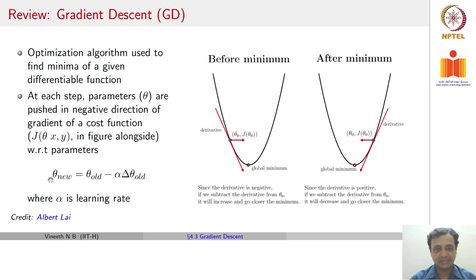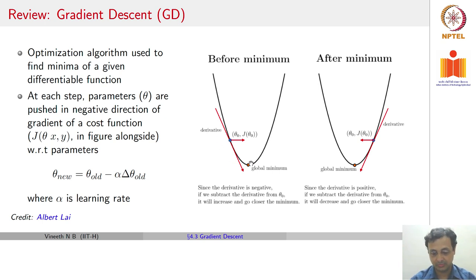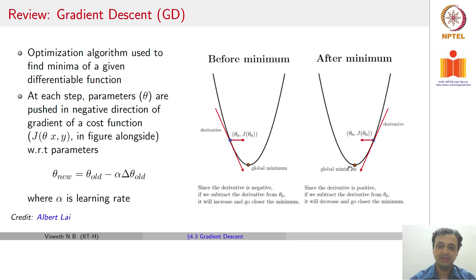The parameter update rule is: the new parameters equal the old parameters minus alpha — the learning rate or step size — times the change in the parameters. For a simple convex function, if you consider a point to the left of the minimum, the gradient there is negative. Going in the negative direction takes you towards the minimum. Starting from the right side where gradient is positive, the negative gradient again points towards the minimum. This is a visual illustration of how gradient descent minimizes any objective function.